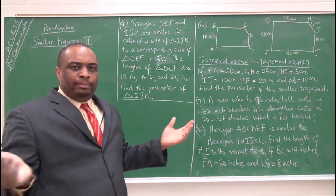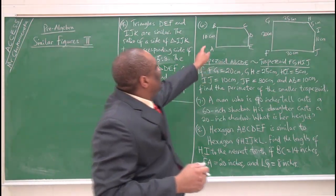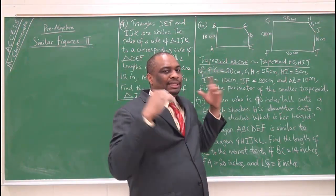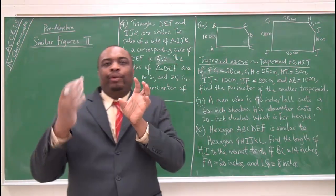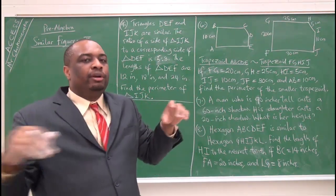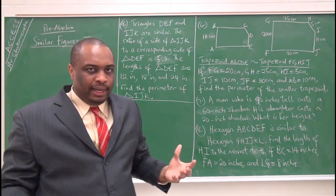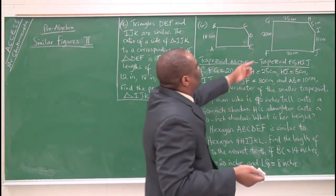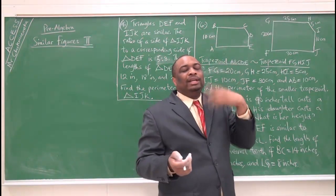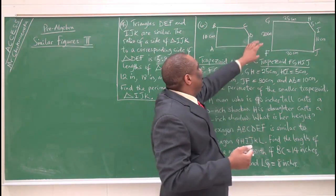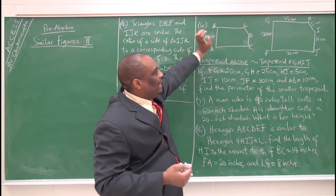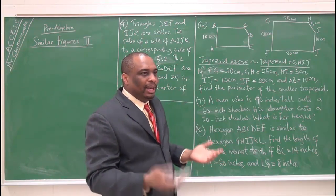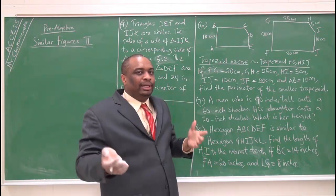Some people will do this as a mental map. This is 10 and this is 20, so that tells you the ratio right away. With similar figures, the ratio of corresponding sides are equivalent. On a mental map, 20 divided by 10 is 2, so they divided each length by 2 to get the corresponding side. That will apply to all other corresponding sides as well.